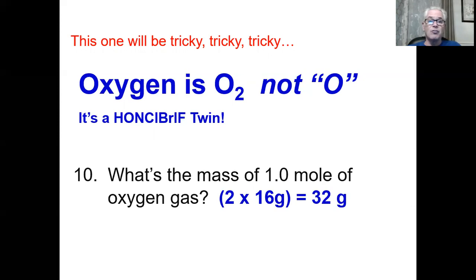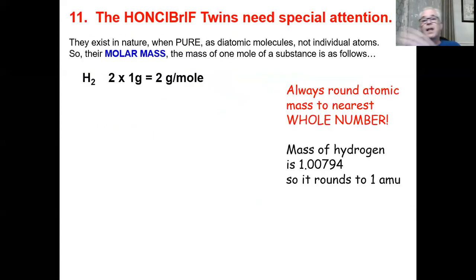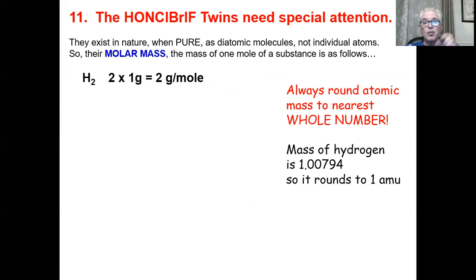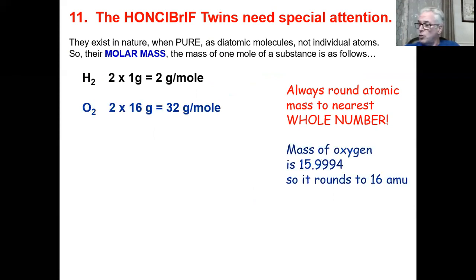The Huckleberry twins are hydrogen, oxygen, nitrogen, chlorine, bromine, iodine, and fluorine. Hydrogen rounds to 1 AMU but it's H₂, so the molar mass is 2 grams per mole. O₂ rounds to 16 AMUs each, so 32 AMUs for the molecule and 32 grams per mole. N₂: nitrogen is 14 AMUs per atom, so 28 AMUs per molecule and 28 grams per mole.